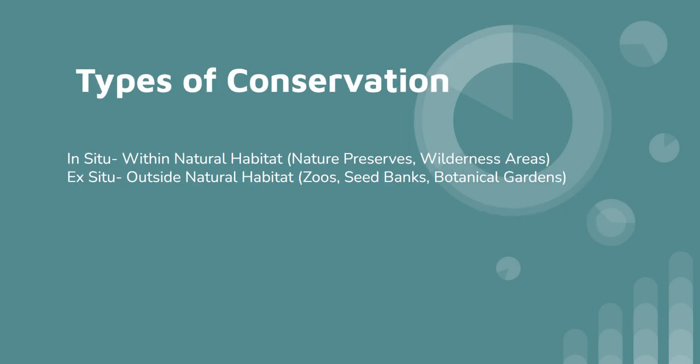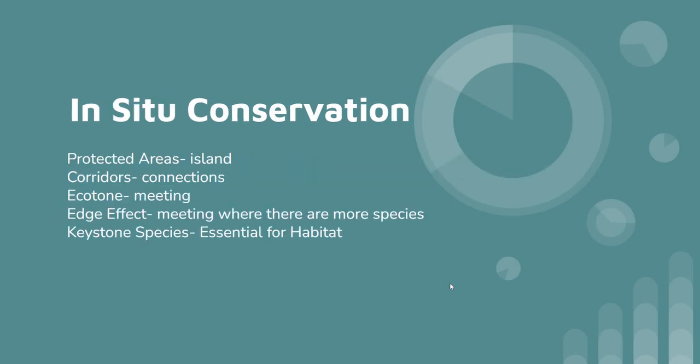How would you adopt a strategy to conserve biodiversity? There are two strategies. One is in situ, which is working with things in place, and the other is ex situ, which is taking them outside and bringing them somewhere else. In situ would be like surrounding an area with a fence and declaring it a nature preserve or wilderness area. Ex situ means removing animals or plants and placing them in arboretums, zoos, or seed banks. Both methods have pros and cons.